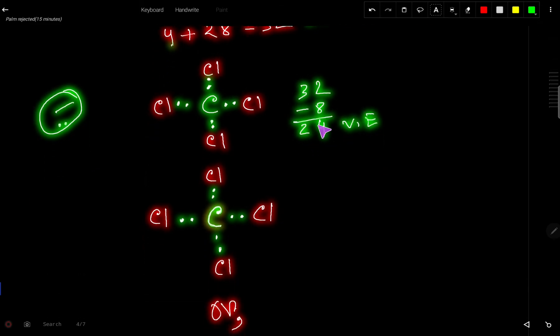So these 24 valence electrons will be used to satisfy the octet of chlorine atoms first. Look, out of 24, this chlorine atom has two valence electrons, so it can maximum take six valence electrons to fulfill its octet.